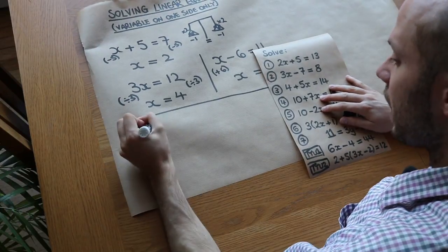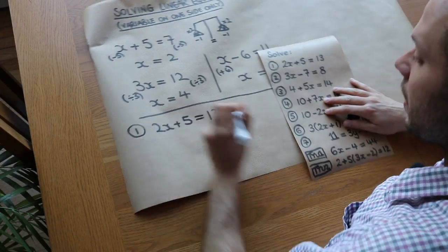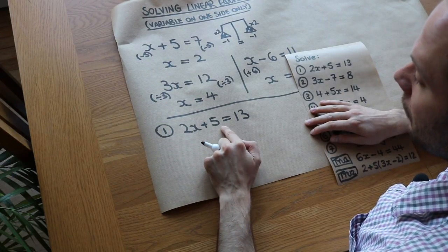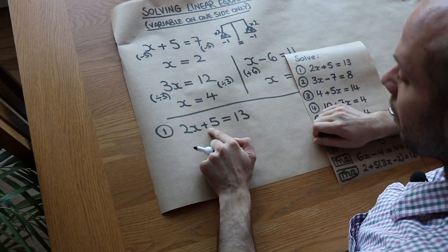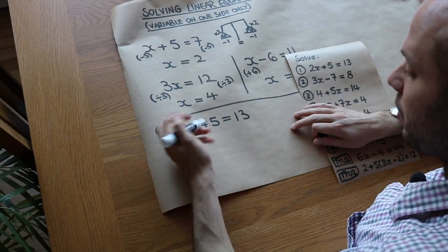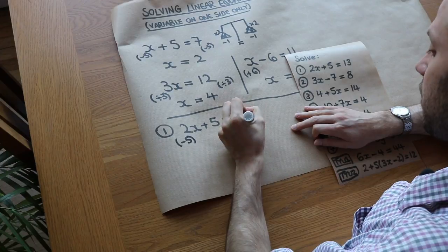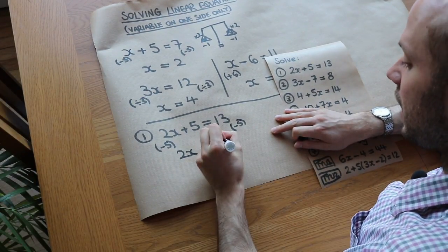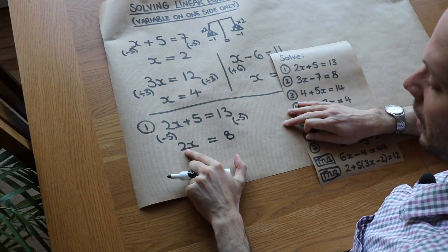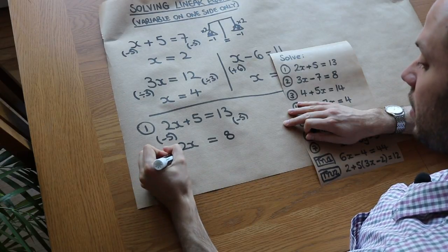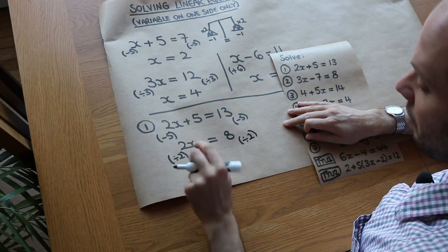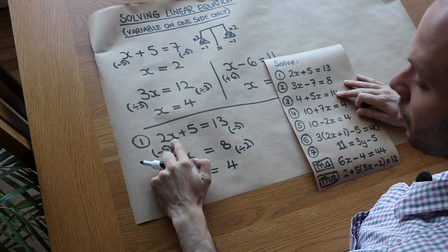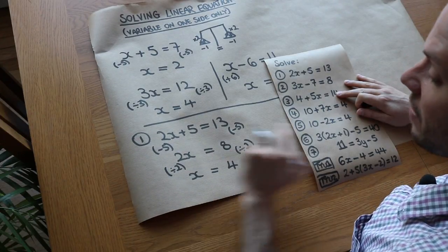Let's solve 2x plus 5 is equal to 13. Notice we have to do more than one step here. Think about the story of what's happening to x: x is first multiplied by 2 and then you're adding 5. You have to undo these in reverse order. The last thing we did was add 5, so we undo that first — we subtract 5 from each side. Don't try to divide by 2 first. That gets rid of the plus 5, leaving 2x on the left hand side, and 13 minus 5 gives 8. Now x has been multiplied by 2, so we divide both sides by 2. That gives x equals 4. Check: 2 times 4 is 8, plus 5 is indeed 13. It worked.